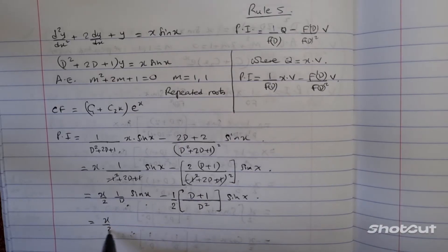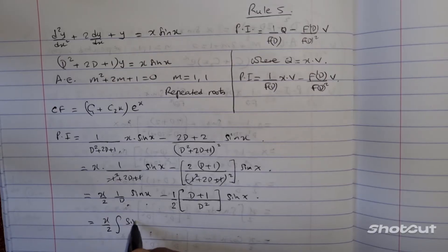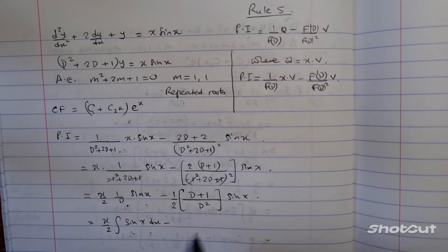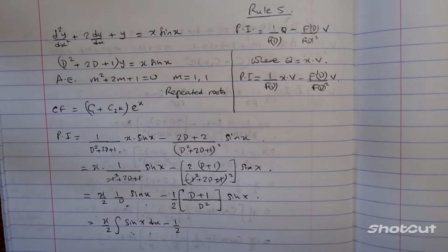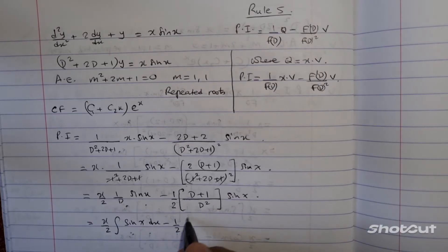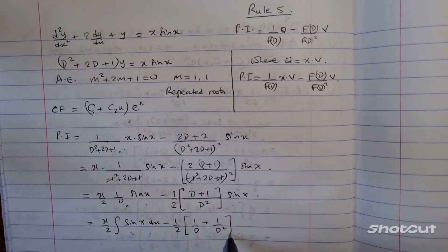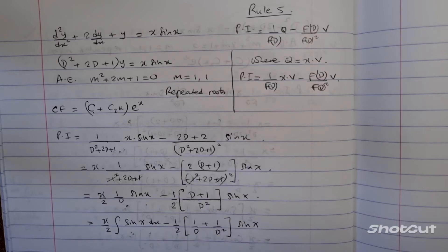So, x over 2, that 1 over d means the integral of sine x, dx, minus half, and then this d divided by d square is 1 over d, basically, so 1 over d plus 1 over d square into sine x.